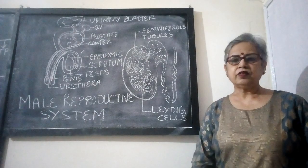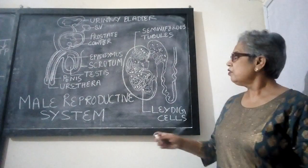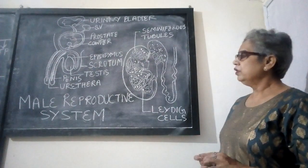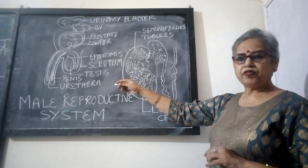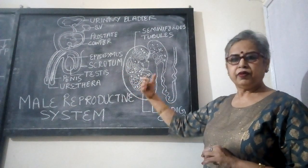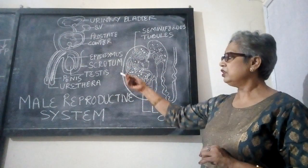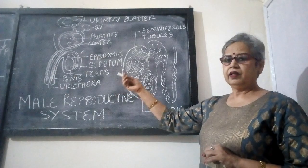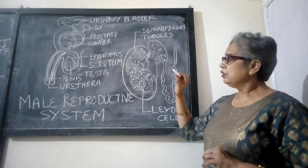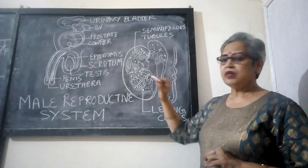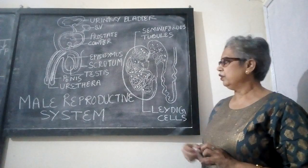Semen is a milky white fluid. This semen is ejaculated and transferred to the female genital tract with the help of the penis. So the accessory sex organs are also very important.